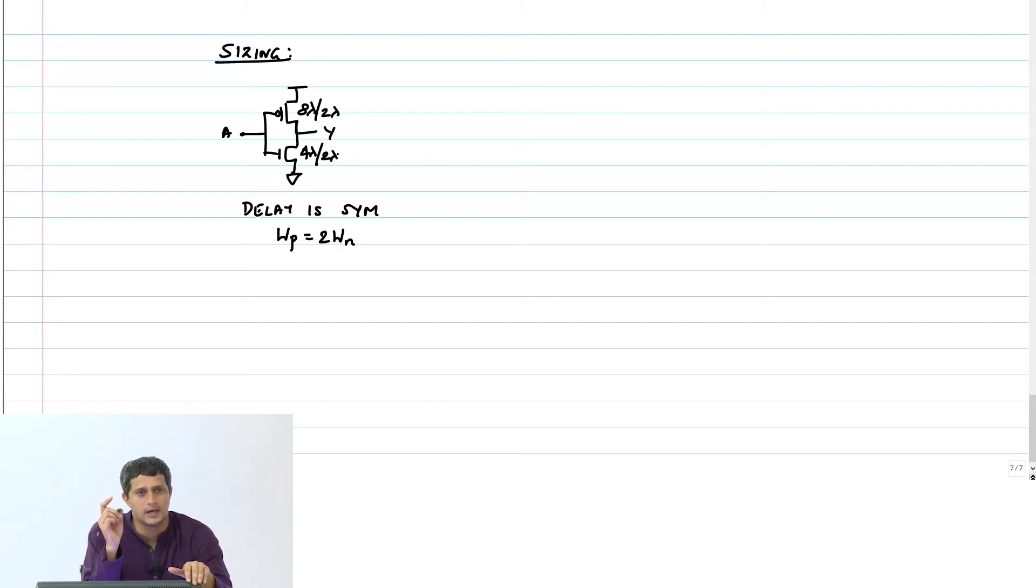Now going forward, since the length is always going to be 2 lambda, and the inverter's width will also be fixed by the technology parameters, depending on the technology the designer will say my minimum width that I can use for the inverter is, let's say, 4 lambda or 8 lambda or whatever. We are going to abstract this whole thing out and simply call it 1.